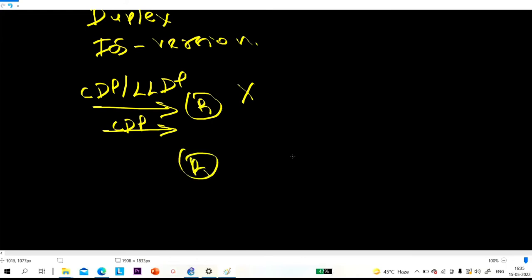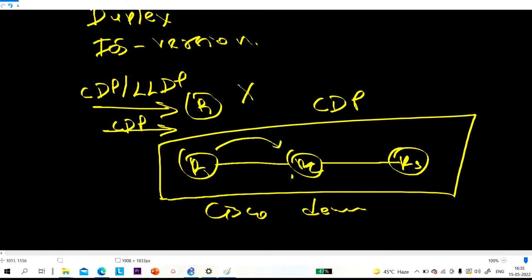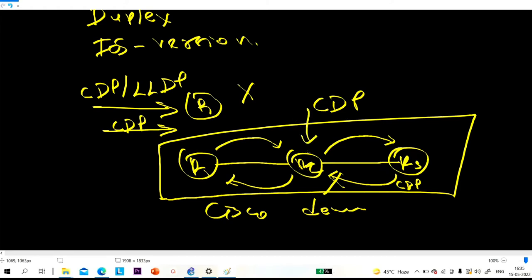Suppose I have routers R1, R2, and R3, and all devices are Cisco devices. By default CDP is enabled, so each router will send CDP messages. R2 will send CDP messages to R3, and R3 will send CDP messages to R2. When R2 receives a CDP message from R3, it adds that information in the neighbor table and discards the message. If you run 'show CDP neighbor' on R2, you will see two neighbors: R1 and R3. On R1, you will see only one neighbor: R2.